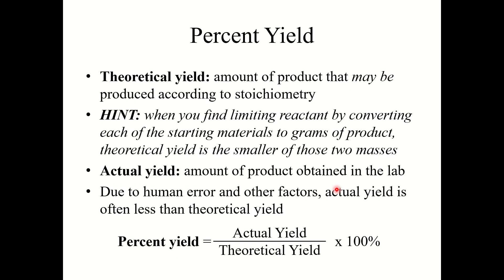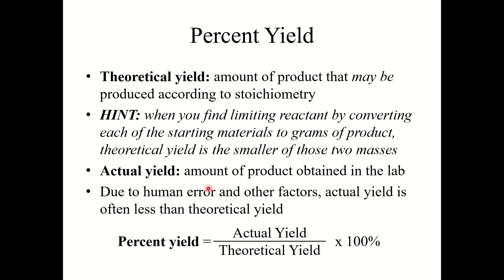The last topic in this section is percent yield. The theoretical yield is the amount of product that may be produced according to stoichiometry — it is the smaller of the two masses when you find the limiting reactant by converting starting materials to grams of product. The actual yield is the amount produced in lab. Our stoichiometry calculations give theoretical yields because they assume 100% efficiency, which doesn't happen in real life due to human errors, wrong conditions, contamination, leaks, or trouble isolating products. The actual yield is almost always less than the theoretical yield. Percent yield equals actual yield divided by theoretical yield times 100%.